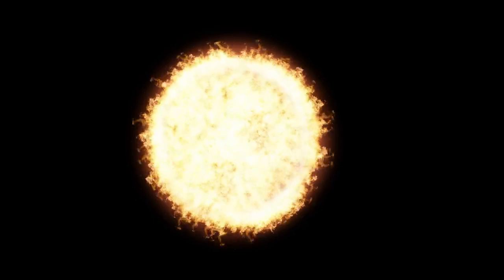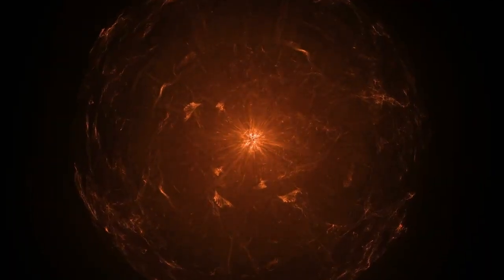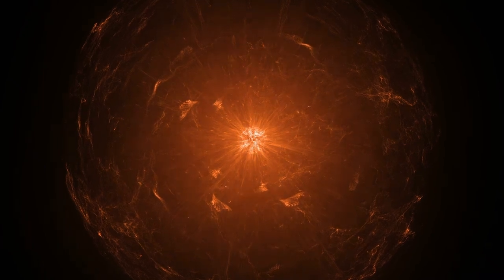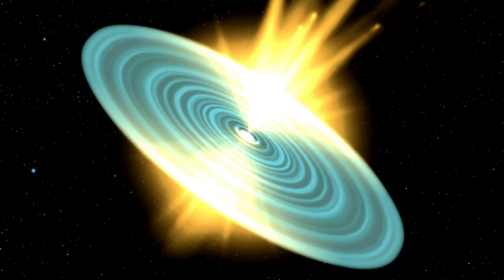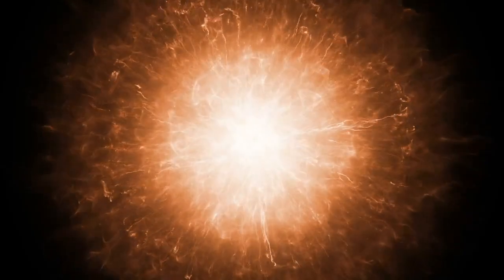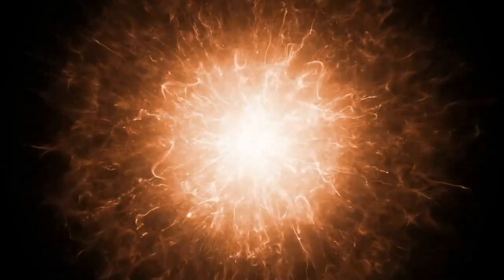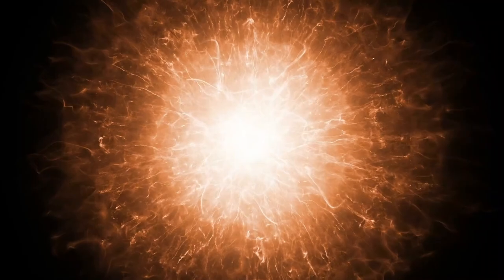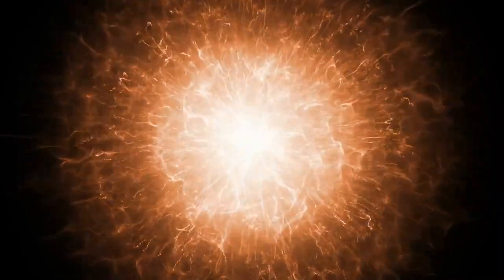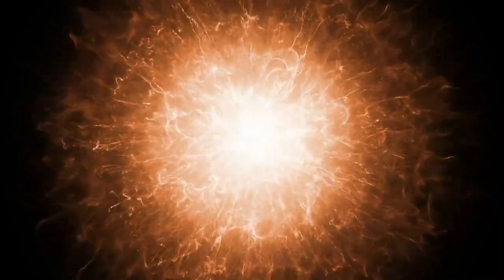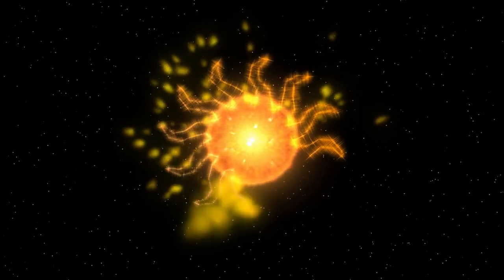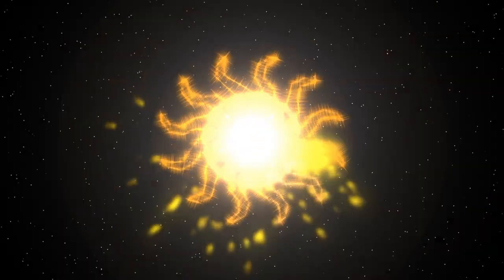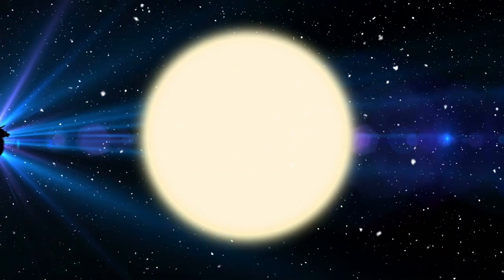Betelgeuse has been considered a supernova candidate for years, with some predicting it could erupt in the next 100,000 years. The recent surge in energy now raises the possibility that this timeline might be shorter than previously thought. The star's recent erratic behaviour, when combined with this sharp brightening, suggests it may be entering a more unstable phase, possibly one that precedes a supernova.